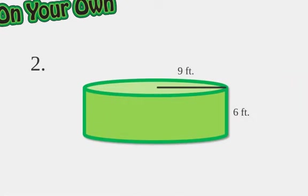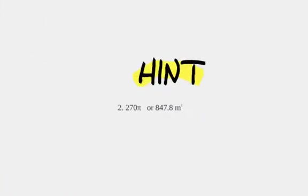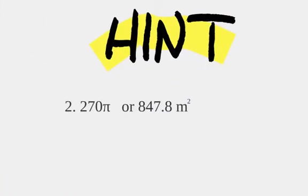Now, I want you to do this one on your own. You've got 9 feet is the radius, 6 feet is the height. Tell me, what is the surface area? All right, how are you doing? You figure out which formula you're using? If you're having trouble, definitely use that circumference time the radius plus the height formula. That's going to be your easiest and safest bet. All right, here it is. 270 pi, or 847.8 meters squared.